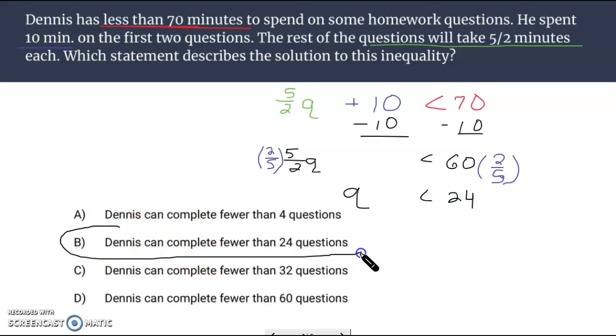Q has to be less than 24. And that leaves us to choice B. Dennis can complete fewer than 24 questions.